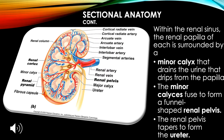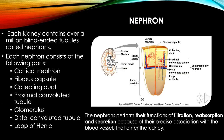Within the renal sinus, the renal papilla of each pyramid is surrounded by a minor calyx that drains the urine dripping from the papilla. The minor calyces fuse to form a funnel-shaped renal pelvis, which tapers to form the ureter. Each kidney contains over a million blind-ended tubules called nephrons.